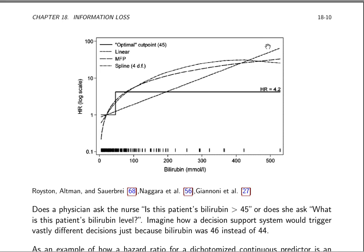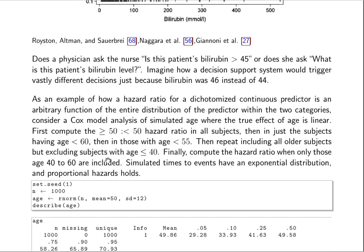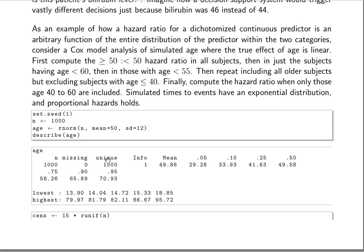but it's going to be more accurate than using a cut point. And if you use a cut point, the optimum cut point was a hazard ratio of 4.2. And that 4.2 has no known definition. And if you were to add subjects with high bilirubin to the sample, that hazard ratio will go up. If you add subjects with low bilirubin to the sample, the hazard ratio will go up.